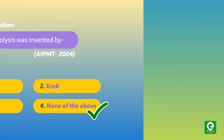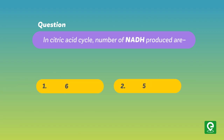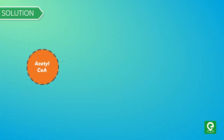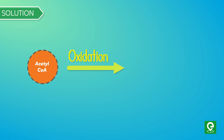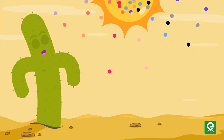Question: In the citric acid cycle, the number of NADH produced is — (1) six, (2) five, (3) four, or (4) three. This question was asked in AFMC 2008. Solution: In the Krebs cycle, acetyl coenzyme A undergoes oxidation and produces carbon dioxide, 2 ATP, 6 NADH, and 2 FADH2. Hence, option 1 is correct.